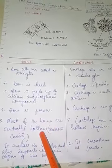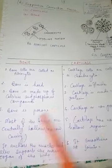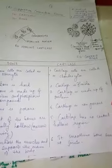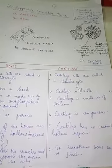Most bones are centrally hollow, and that hollow space is called the marrow cavity. Cartilage has no central hollow, meaning no cavity is present inside the cartilage.